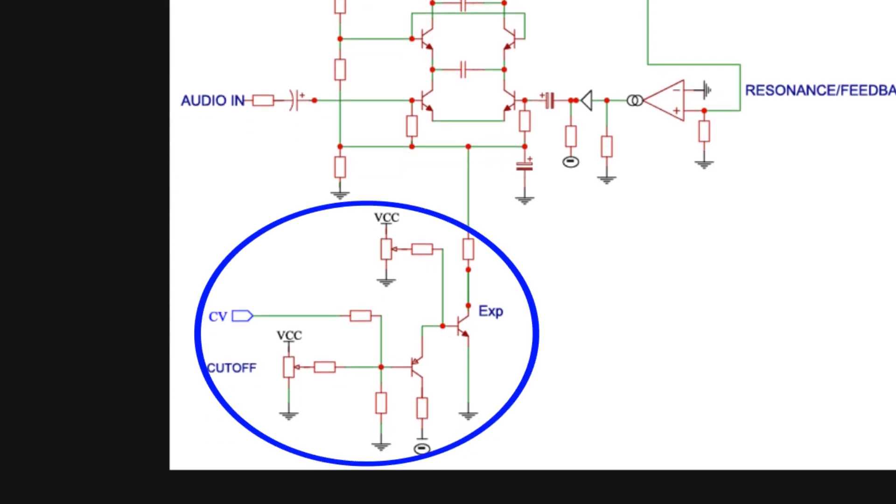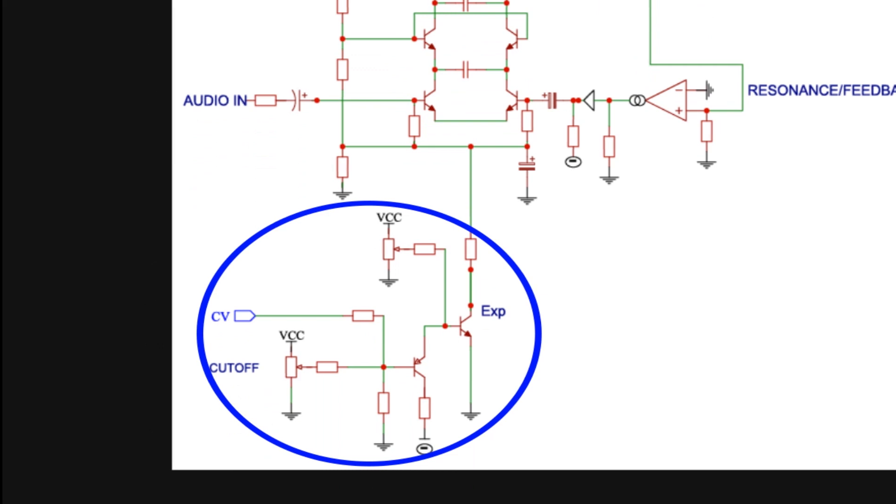This is the part of the filter that makes it responsive to control voltage, or to be precise, control current. Interestingly, we could replace this whole section with a variable resistor to ground and the filter will still work, but that's not what we want.